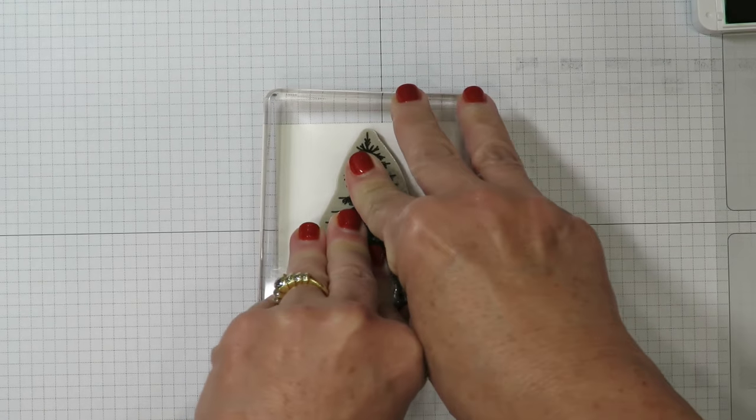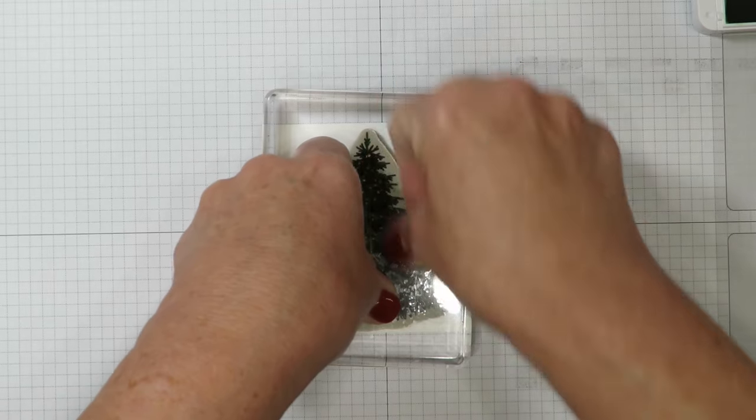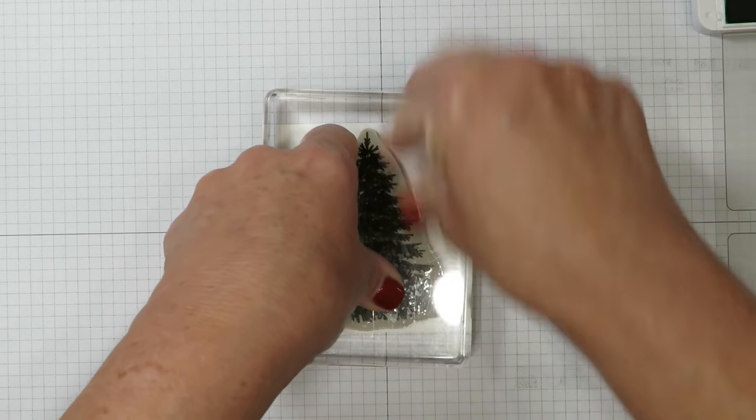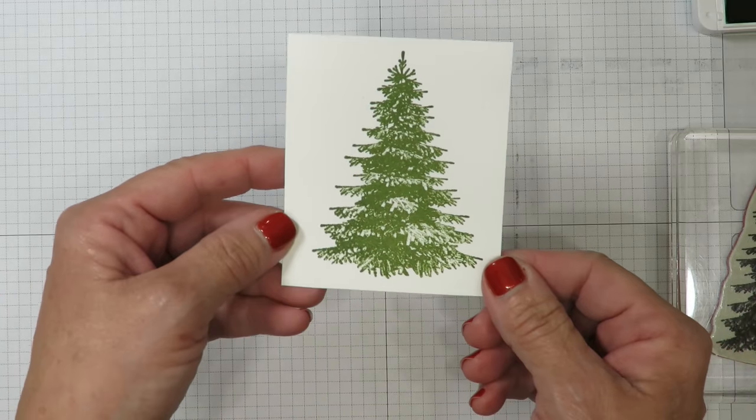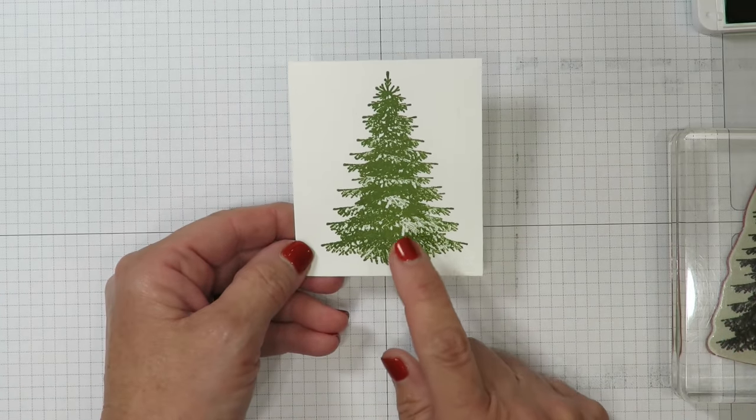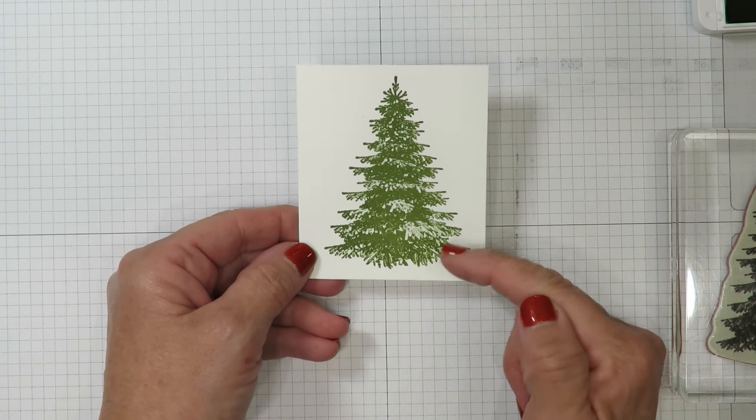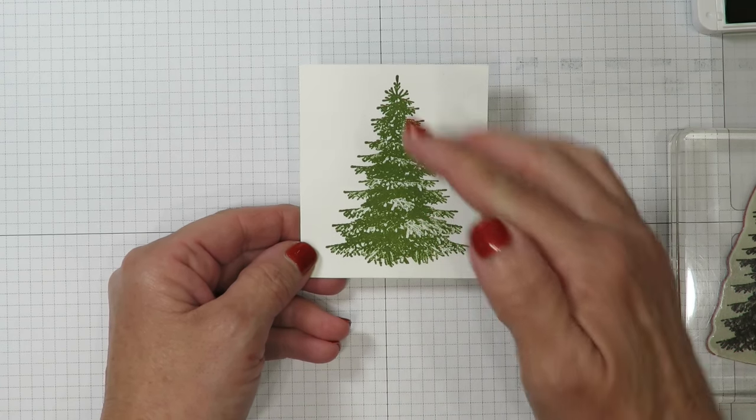Lots of firm, even pressure. This is a very large, solid stamp. You want to make sure you get all those little details out. I want to call your attention to this area here. You may think that that is a flaw in the stamp. It's not. It's part of the artist's rendering. It's actually to be reminiscent of the Snow White.